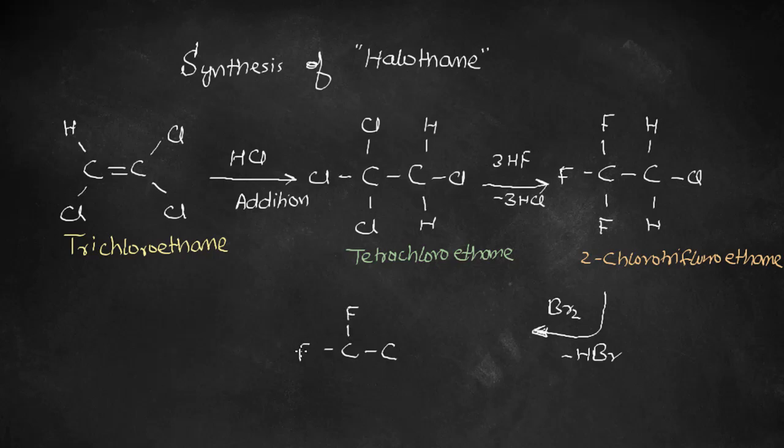This undergoes subsequent bromination with bromine, leaving behind hydrogen bromide, to form halothane, which has the common name 2-bromo-2-chloro-trifluoroethane.